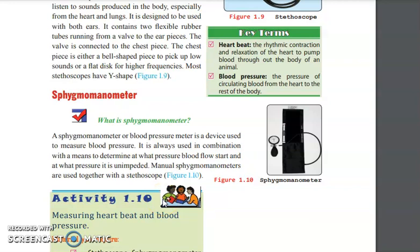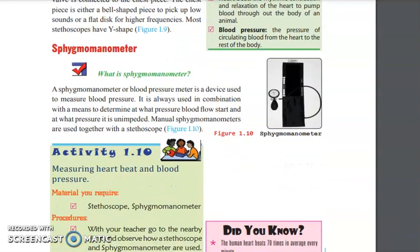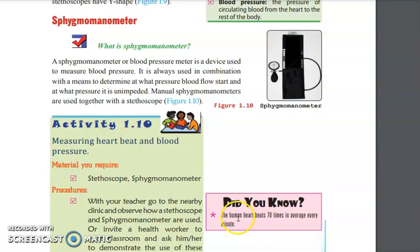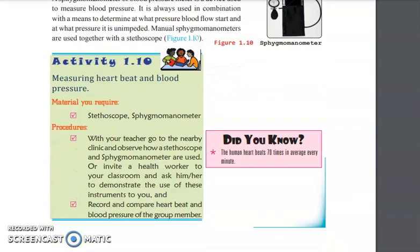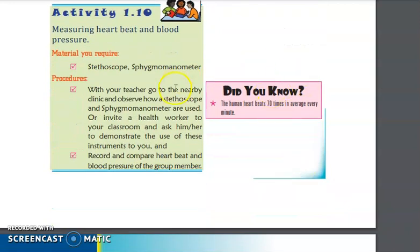The next one is sphygmomanometer or blood pressure meter. The manual sphygmomanometer uses a stethoscope. It is wrapped around our arm to measure the flow of our blood. The human heart beats 70 times on average every minute, so you have to know this one.